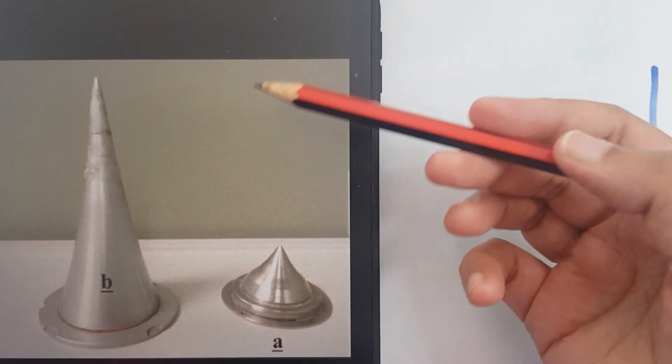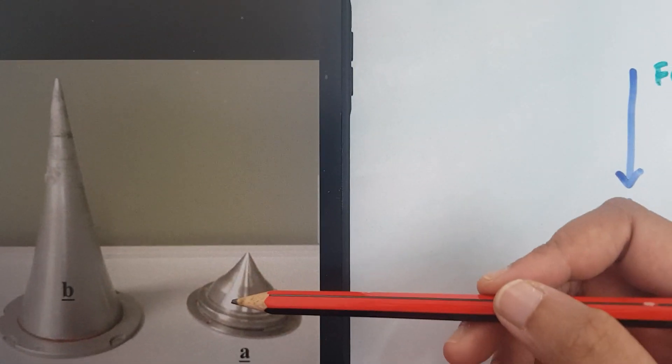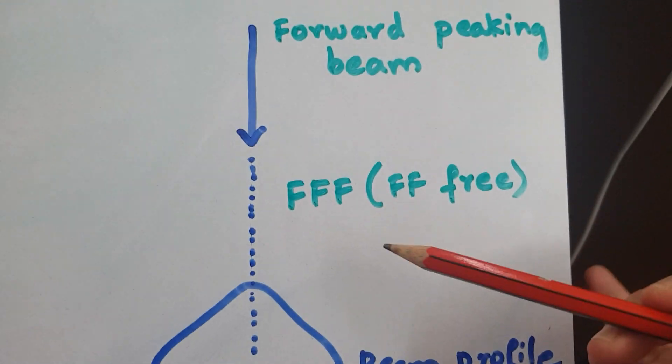If it's high energy we need more attenuation, if it's low, less attenuation.